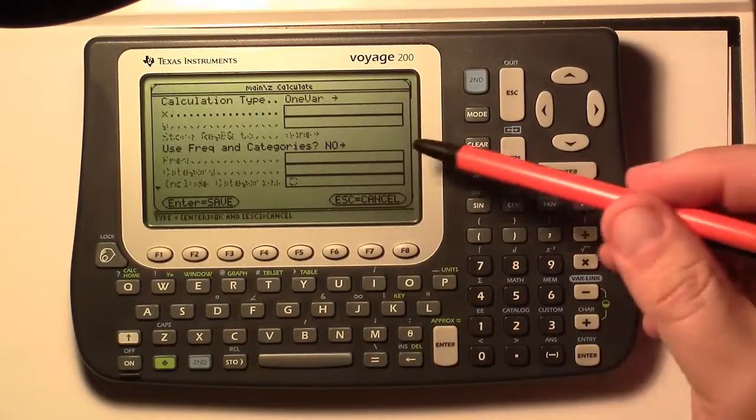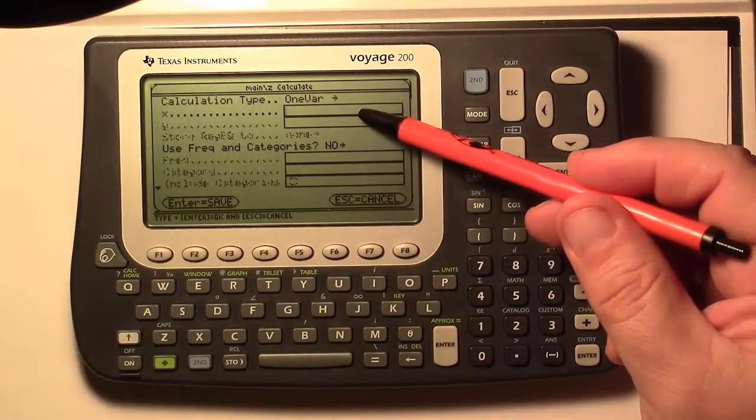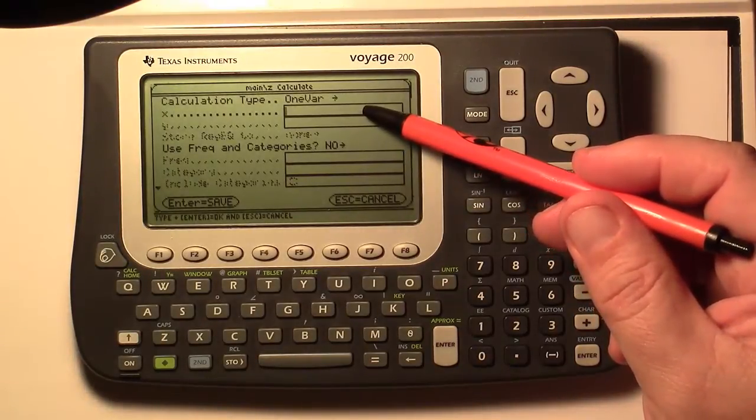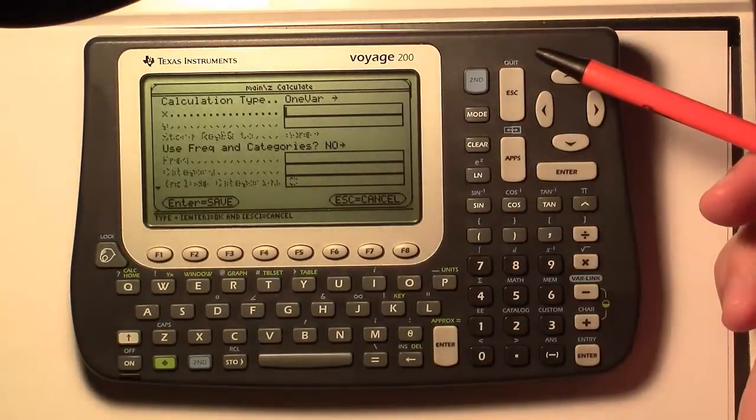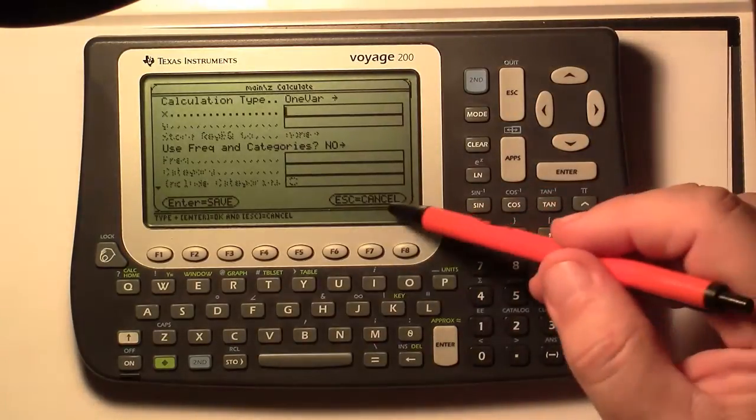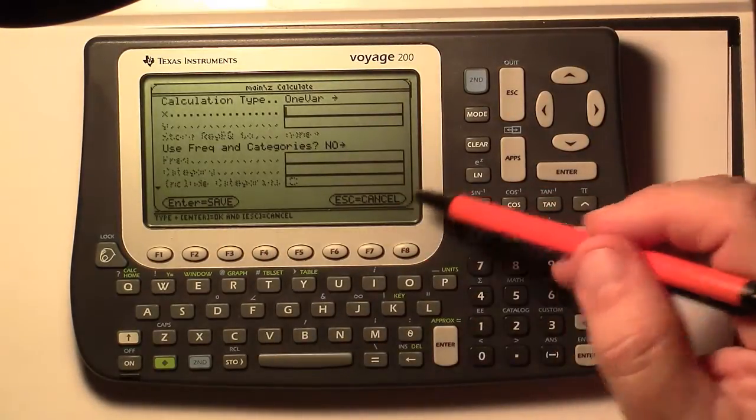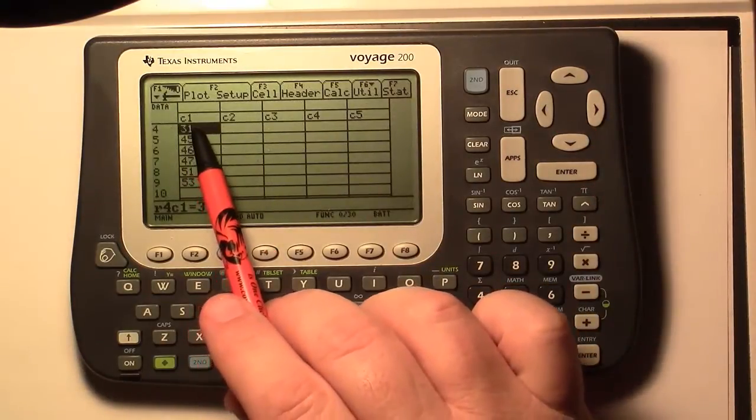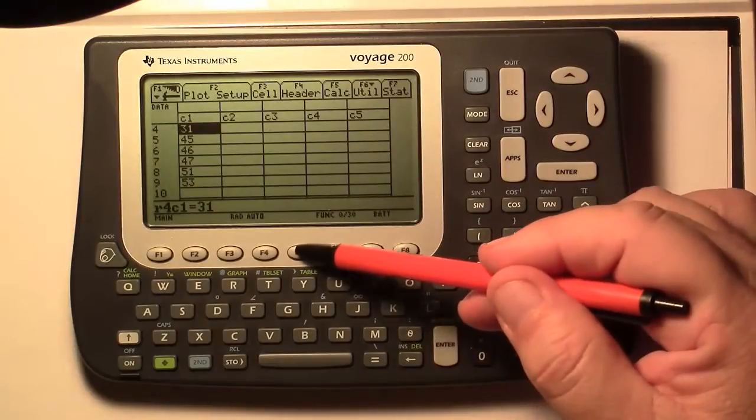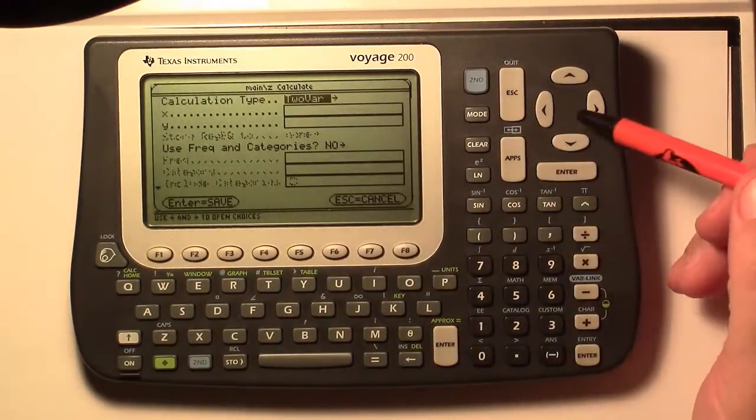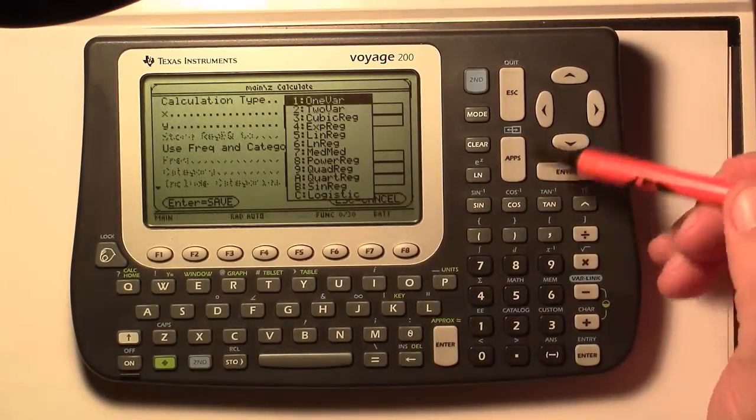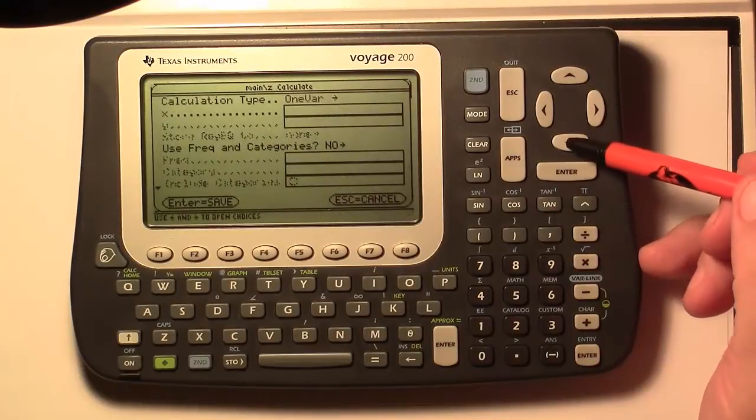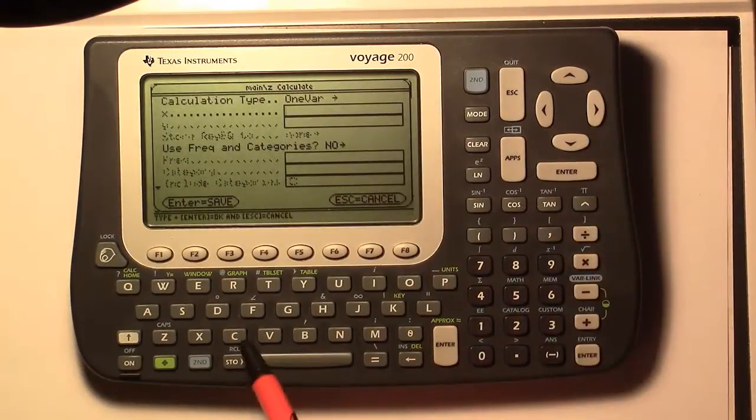Then I'm going to down arrow. And it's asking me for the X. Now this is the name of our column. And if you don't remember what this is, then you can escape. And our column is C1. So let's go back there. So do F5. Again, I want to choose one var. And then I'll put in C1. So I'll do C and then one.